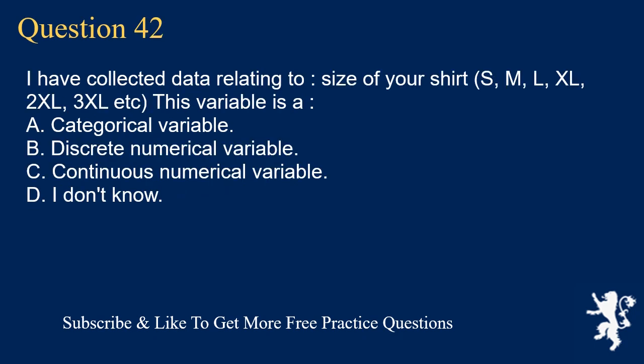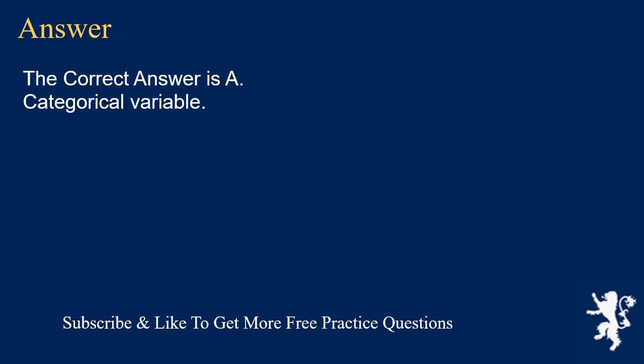Question 42: I have collected data relating to size of your shirt — S, M, L, XL, 2XL, 3XL, etc. This variable is A. categorical variable, B. discrete numerical variable, C. continuous numerical variable, D. I don't know. The correct answer is A, categorical variable.